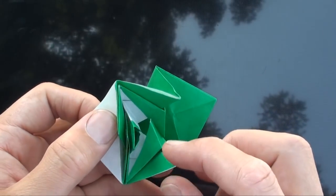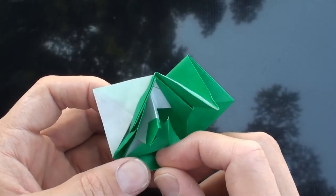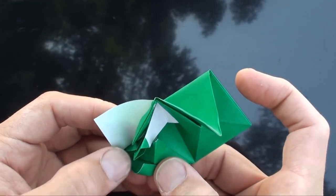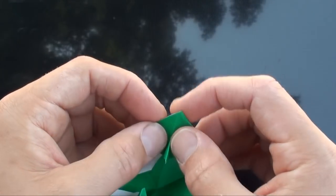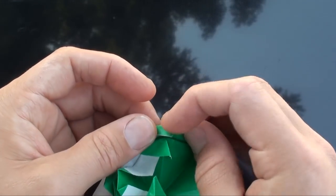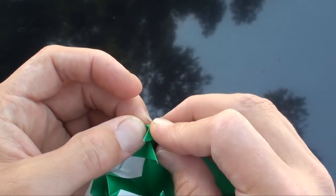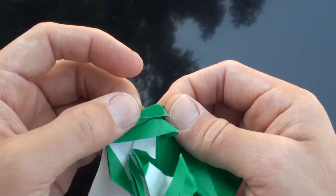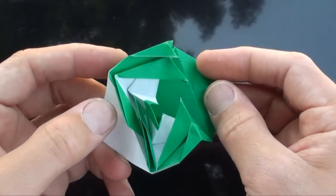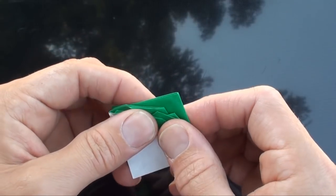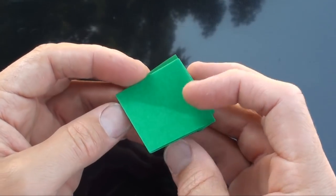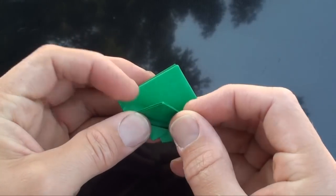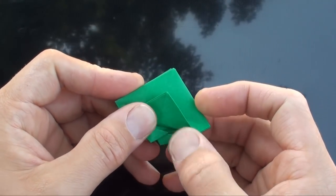And let's do another little reverse fold. Outside reverse fold here. And here too. Just like that. And up here we're going to fold this like here. This is going to be the stem of the pumpkin.